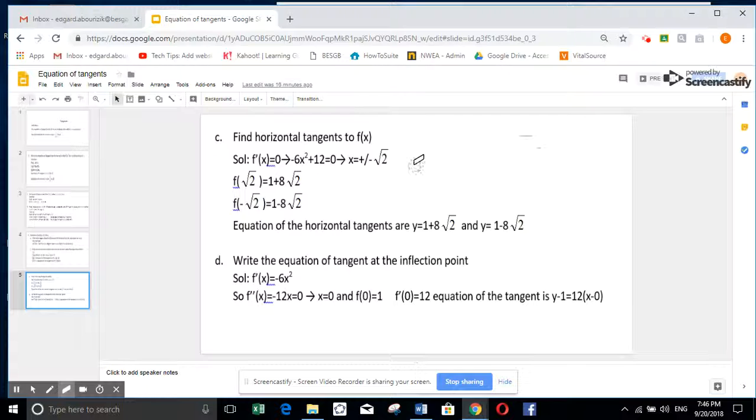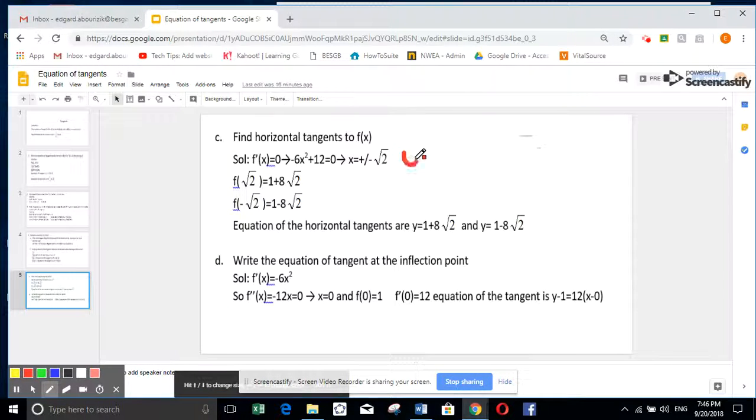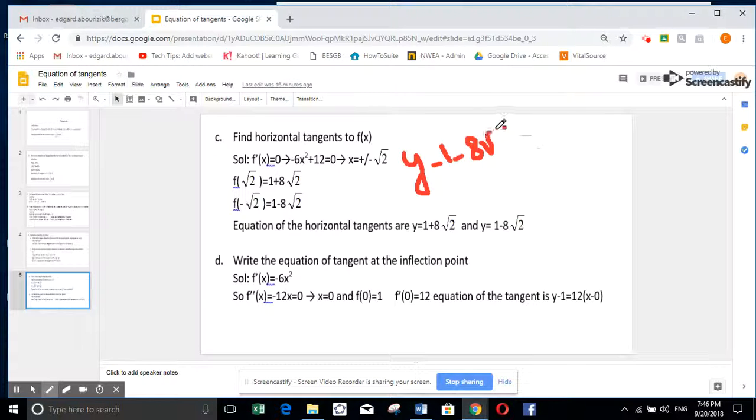So what do I get? Let me write it. Let me do it for the first one. y minus y of a is 1 minus 8 radical 2. Derivative here is horizontal. It means 0 into x minus radical 2. 0 times any expression is 0. So the first one will be, you take this to the other side, so it will be 1 plus 8 radical 2 and the same for 1 minus 8 radical 2.